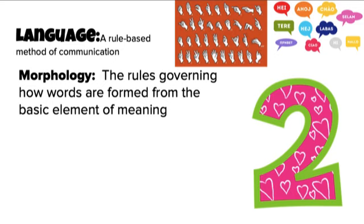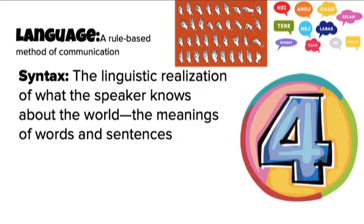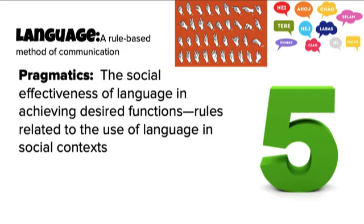Second is morphology — the rules that govern how words are formed from the basic elements of meaning. Third is semantics — the rules for how we string words together to form phrases and sentences, that is the relationships among the elements of a sentence. Fourth is syntax — the linguistic realization of what the speaker knows about the world, that is the meanings of words and sentences. And fifth, pragmatics — the social effectiveness of language in achieving desired functions, in other words the rules related to how we use language in a social context.